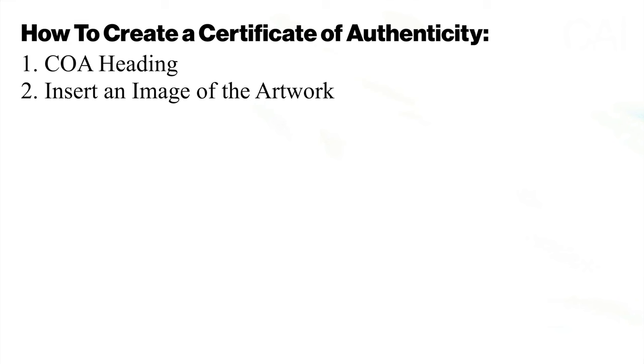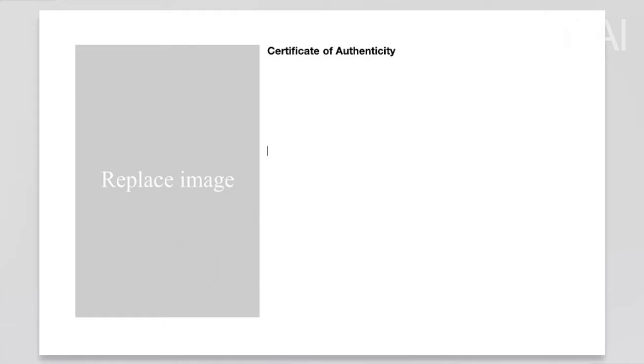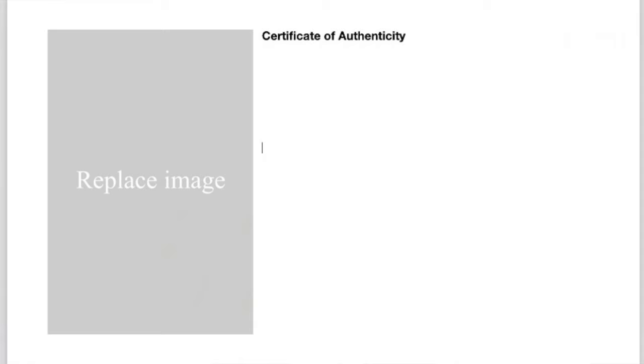Step two: insert an image of the artwork. This step is sadly often forgotten by artists or other online guides on how to create your certificate of authenticity, but it is important to include an image of the artwork in question so there can be no confusion whatsoever about the designated artwork for which the COA was created.